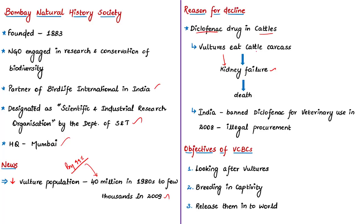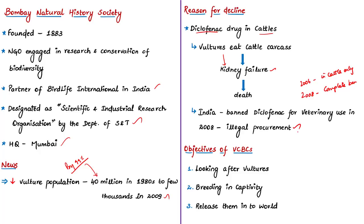The Government of India banned the veterinary use of Diclofenac in cattle in 2006. Then in 2008, a complete ban on the use of Diclofenac in animals was notified. But even after the 2006 ban, farmers continued to illegally procure this drug, resulting in more vulture deaths. That is why in 2008, a complete ban on Diclofenac for all veterinary use was enforced. Vultures are slow-breeding birds, so an immediate intervention was required to prevent them from extinction.